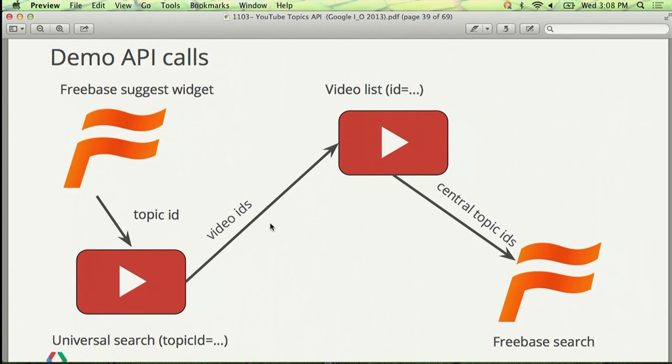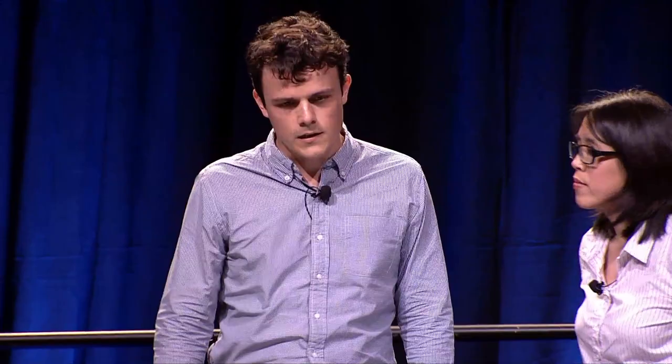So what does this tell us except that it's possible to build topic-agnostic applications? Even though these entities are really specific and narrow, you can use Freebase to get more information about each of the entities we annotate a video with. Also, if you're building a domain-specific application — say a movie site — you can use Freebase to look up the director of a movie, look up actors in a movie, and then cluster videos based on whether there are interviews, trailers, and so on.